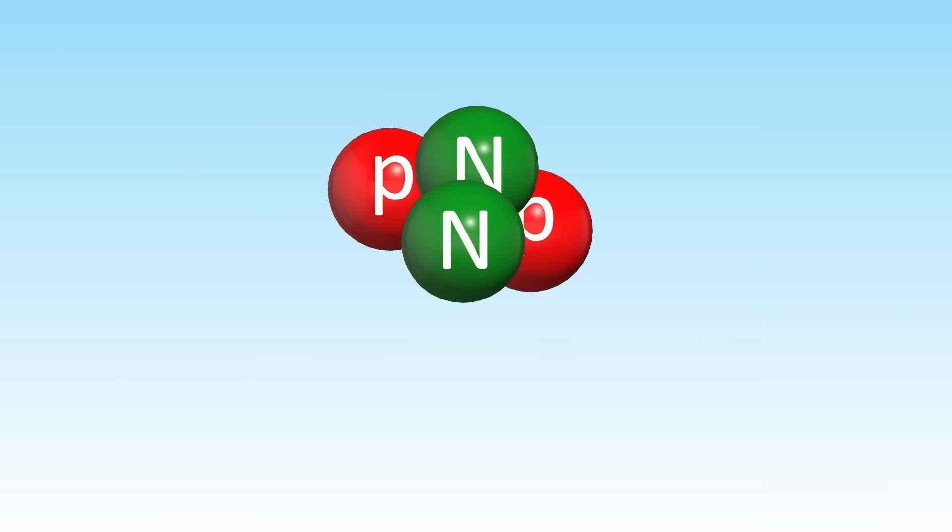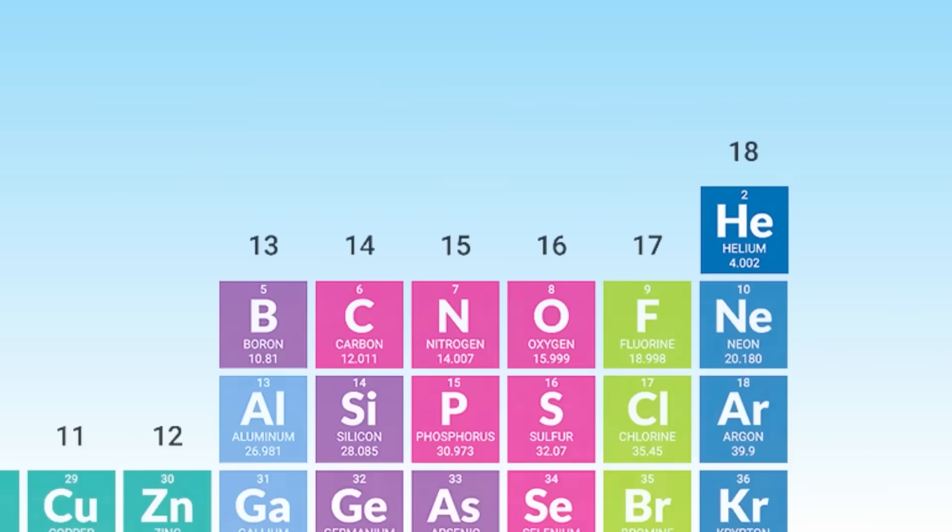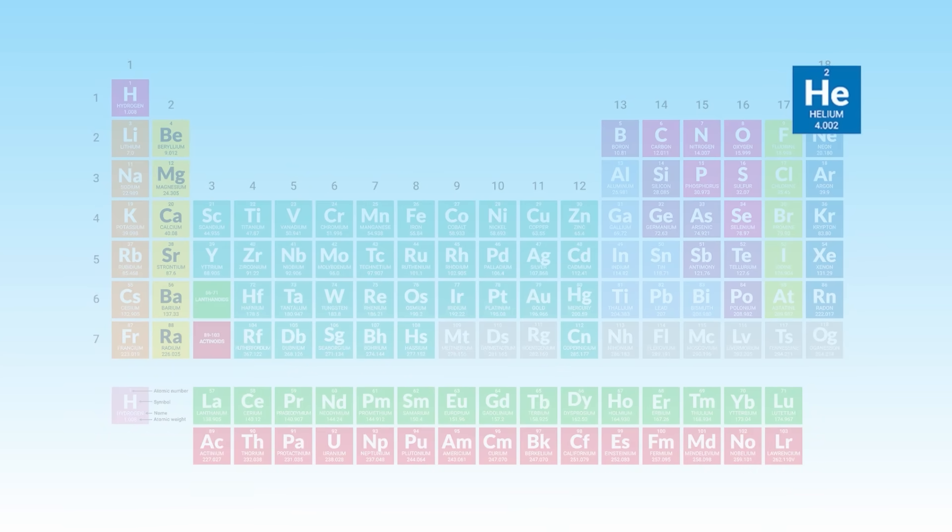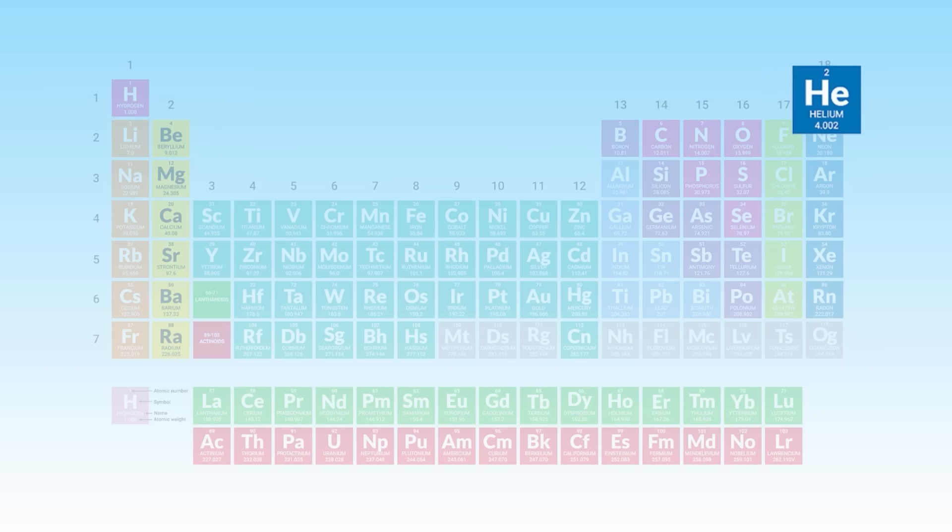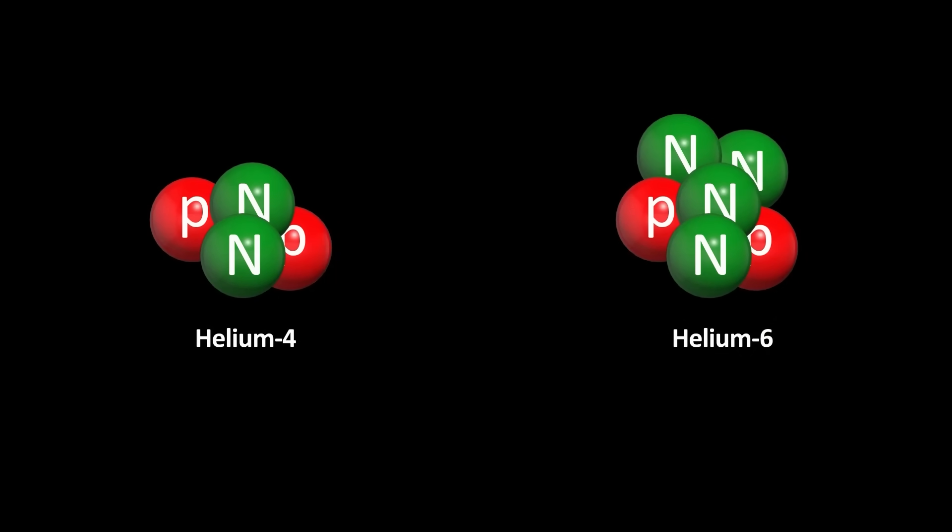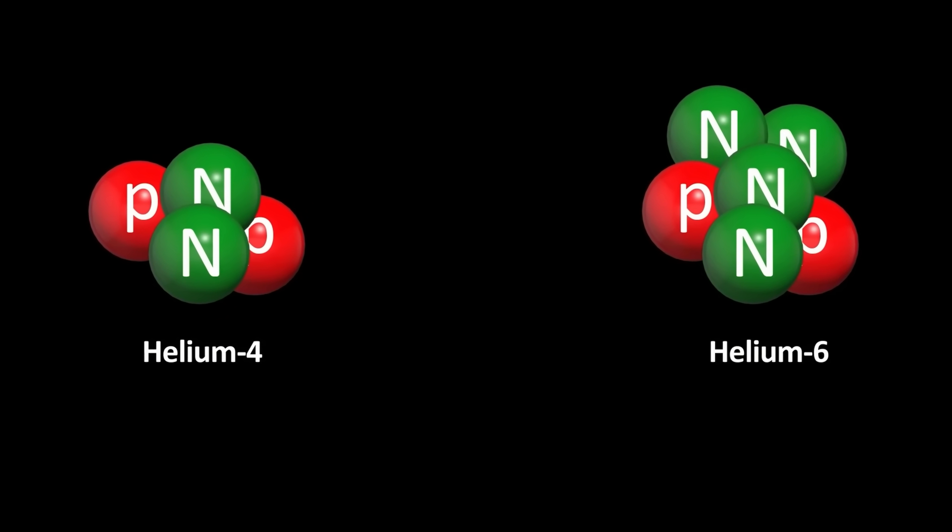The number of protons in an element is important because it is solely responsible for its atomic properties. This proton number corresponds to the position of the element on the periodic table. A given element or atom can have the same number of protons and electrons, but different numbers of neutrons. These are called isotopes of the element. They have exactly the same physical and chemical properties, but differ in mass.